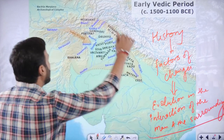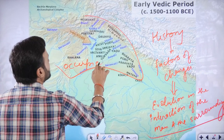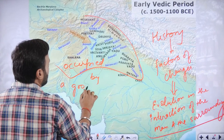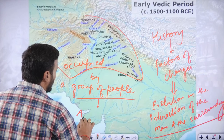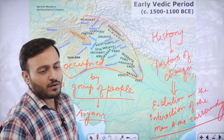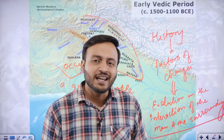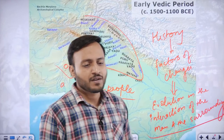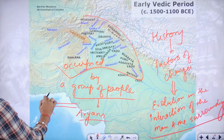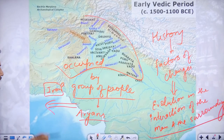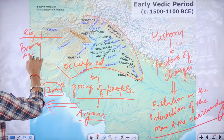This region was occupied by a group of people called the Aryans. They will definitely have some evolution in their way of living and changes in the manner in which they were occupying this area. We will try to understand the single factor of change — that is iron. If you remember the previous classes, the Rig Vedic people were the bronze age culture.